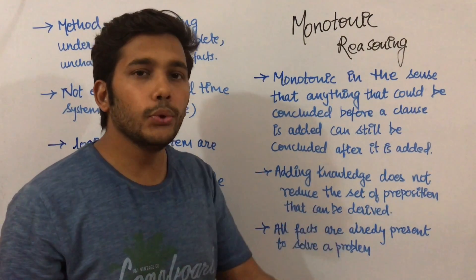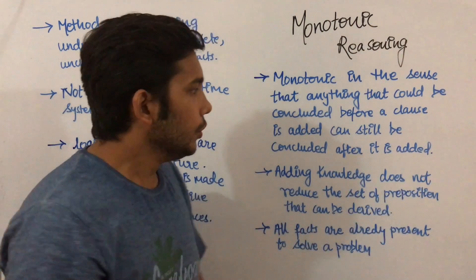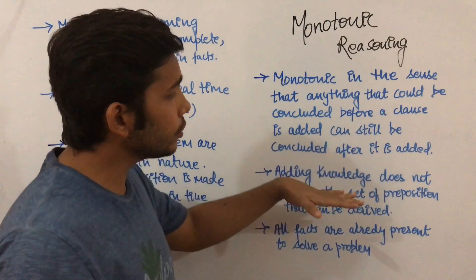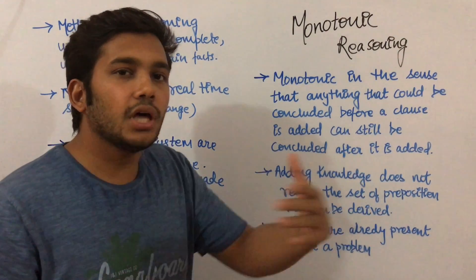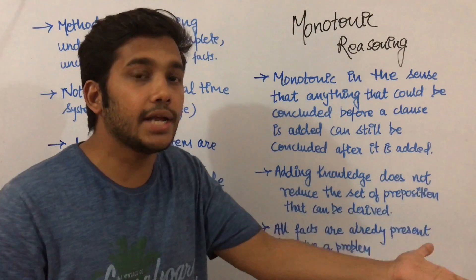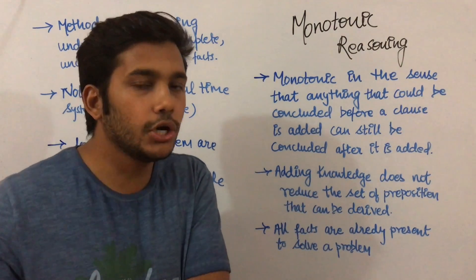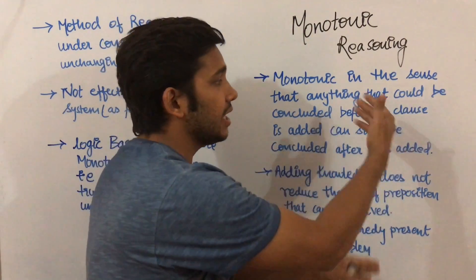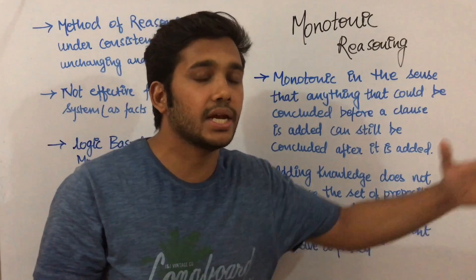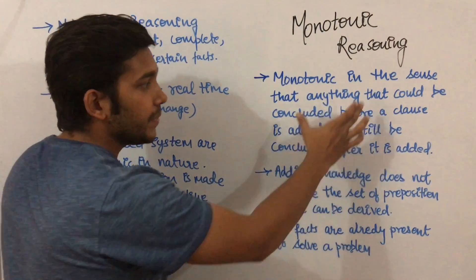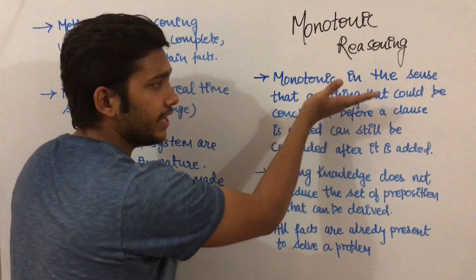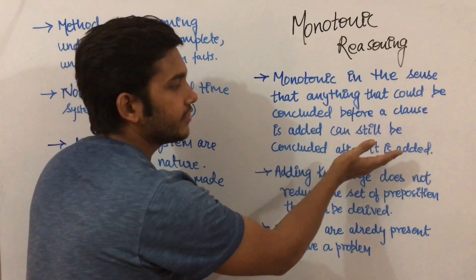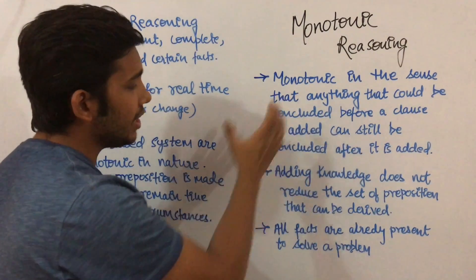Suppose I give the clause that Tarun Kumar got placed in Kent Aro. From this clause you can conclude that Tarun Kumar is now placed. Now if I add another clause — that Tarun Kumar got placed in Kent Aro with the help of his BFF Anushka — this will not change the previous conclusion that Tarun Kumar got placed in Kent Aro.